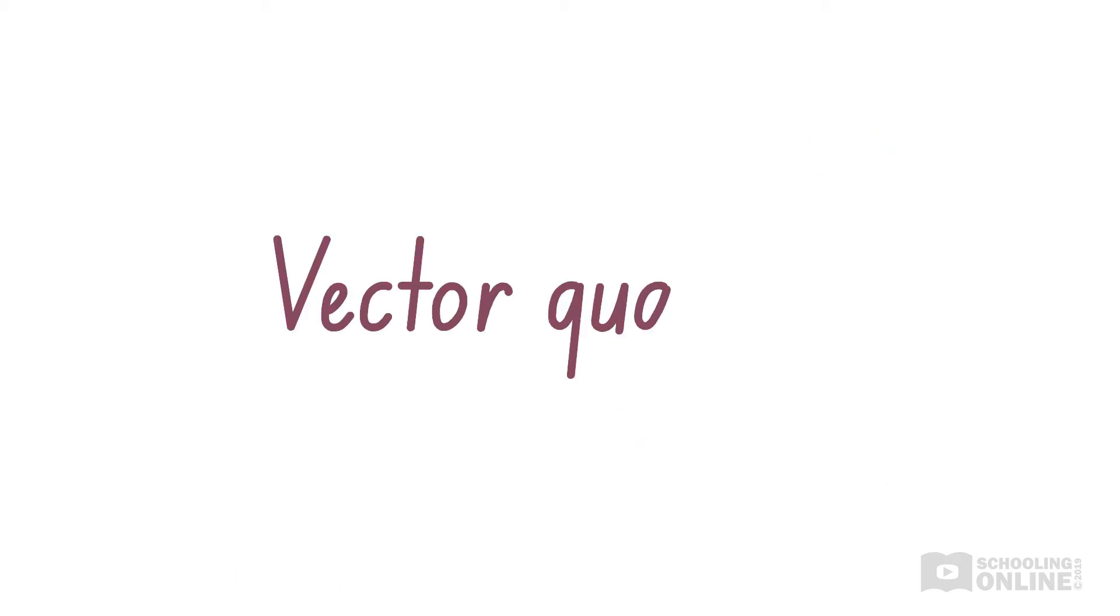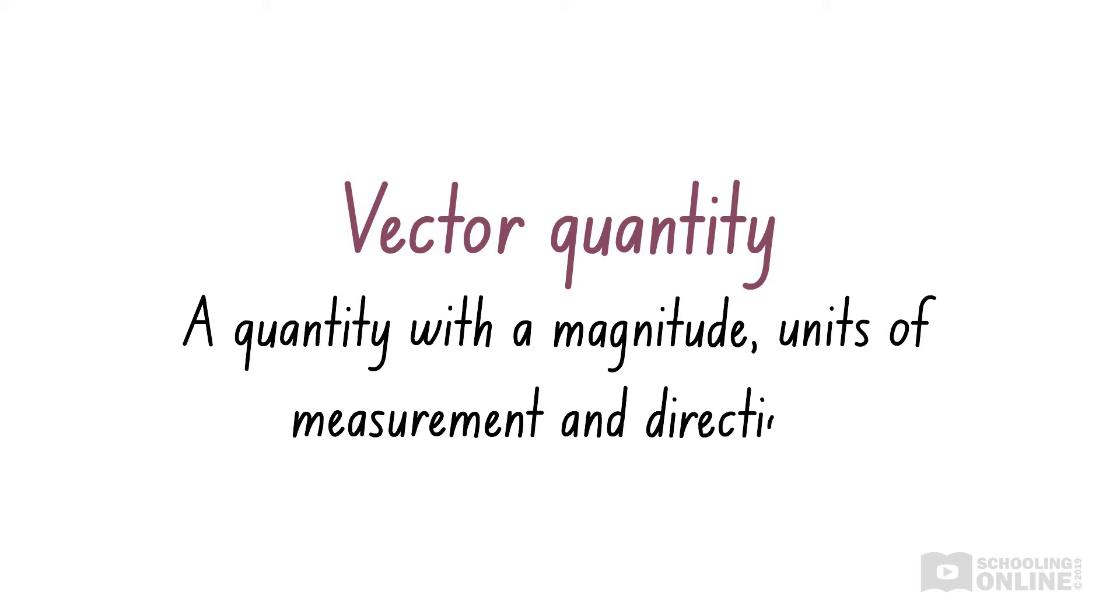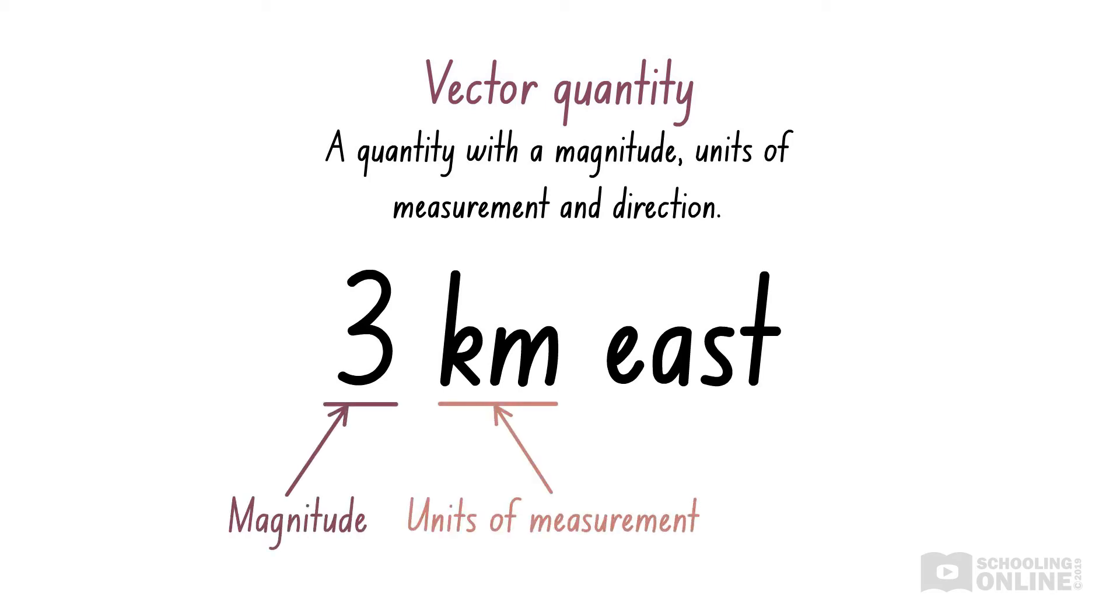Next, we need to consider vector quantities, or vectors for short. A vector has a magnitude, its units of measurement, and its direction. An example of this is 3 kilometres east. The magnitude is 3, the units are kilometres, and the direction is east. Since this is written with a direction, it must be a vector quantity.